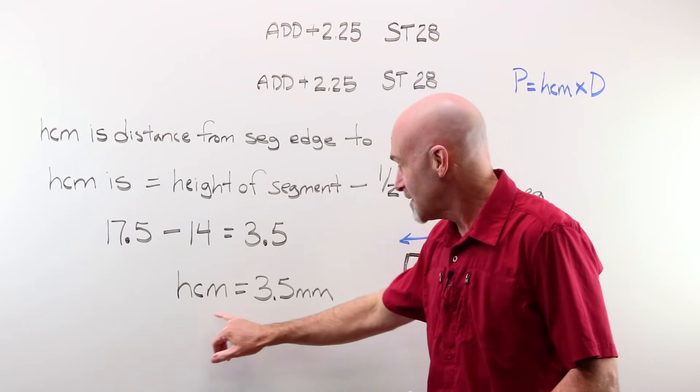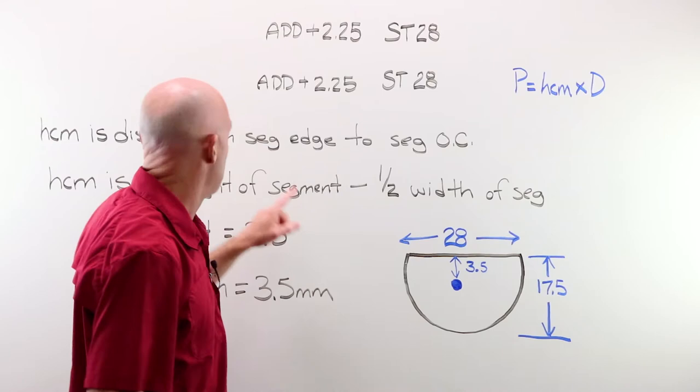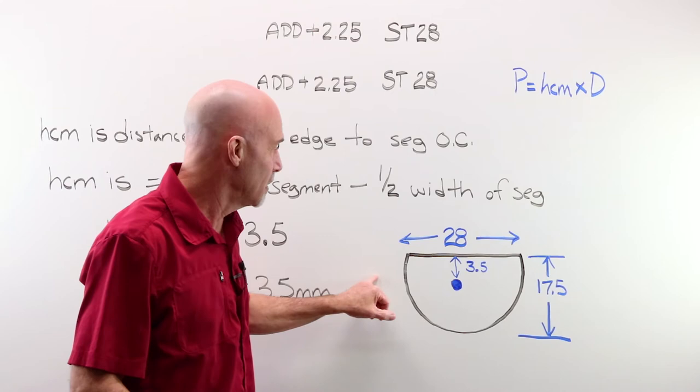So I'm halfway there. I just need to figure out D, which is nothing more than my add power, and I can solve this problem. Gonna talk a little bit about why we didn't need this, what direction image jump always occurs, and then we'll actually solve to determine how much this would be creating.